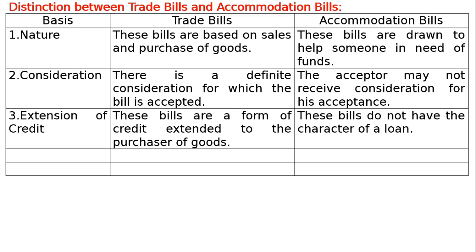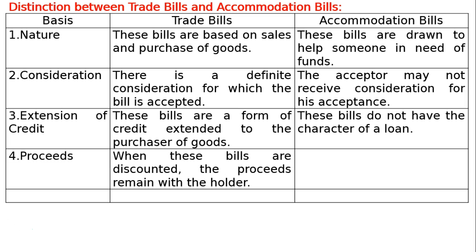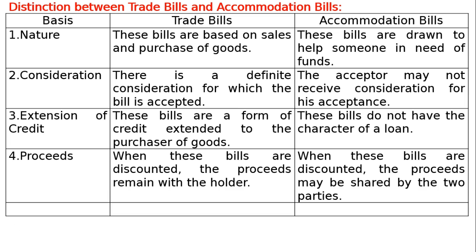Fourth Basis is Proceeds. In case of trade bills, when these bills are discounted, the proceeds remain with the holder. In case of accommodation bills, when these bills are discounted, the proceeds may be shared by the two parties.